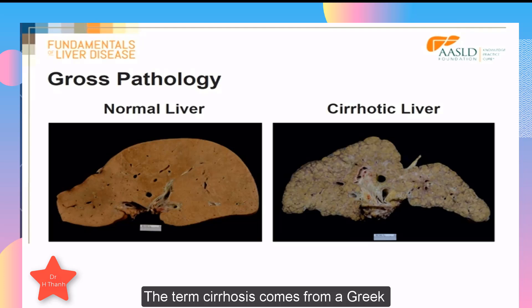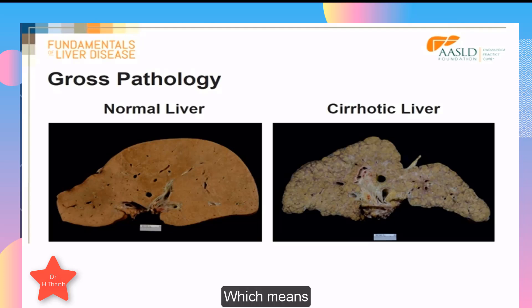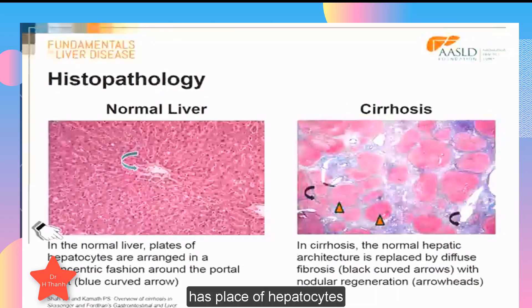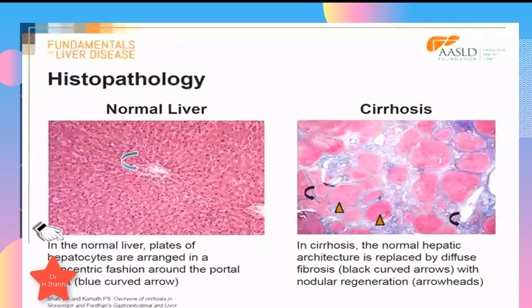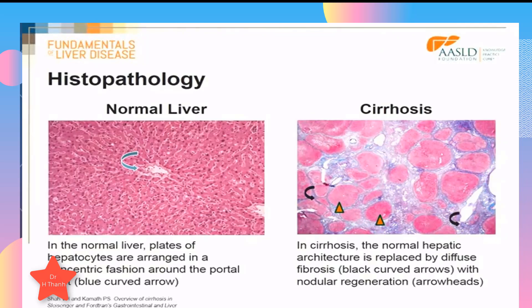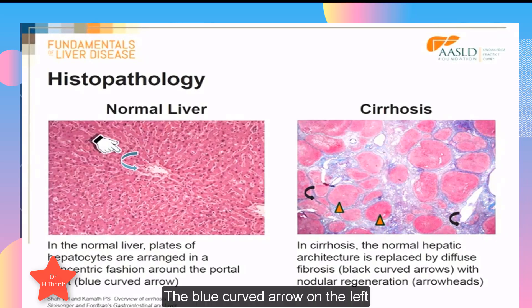The term cirrhosis comes from a Greek word 'kiros,' which means tawny, alluding to the peculiar color a cirrhotic liver has. The normal liver on histopathology has plates of hepatocytes arranged in a concentric fashion around the portal tract, as can be seen with the blue curved arrow on the left.